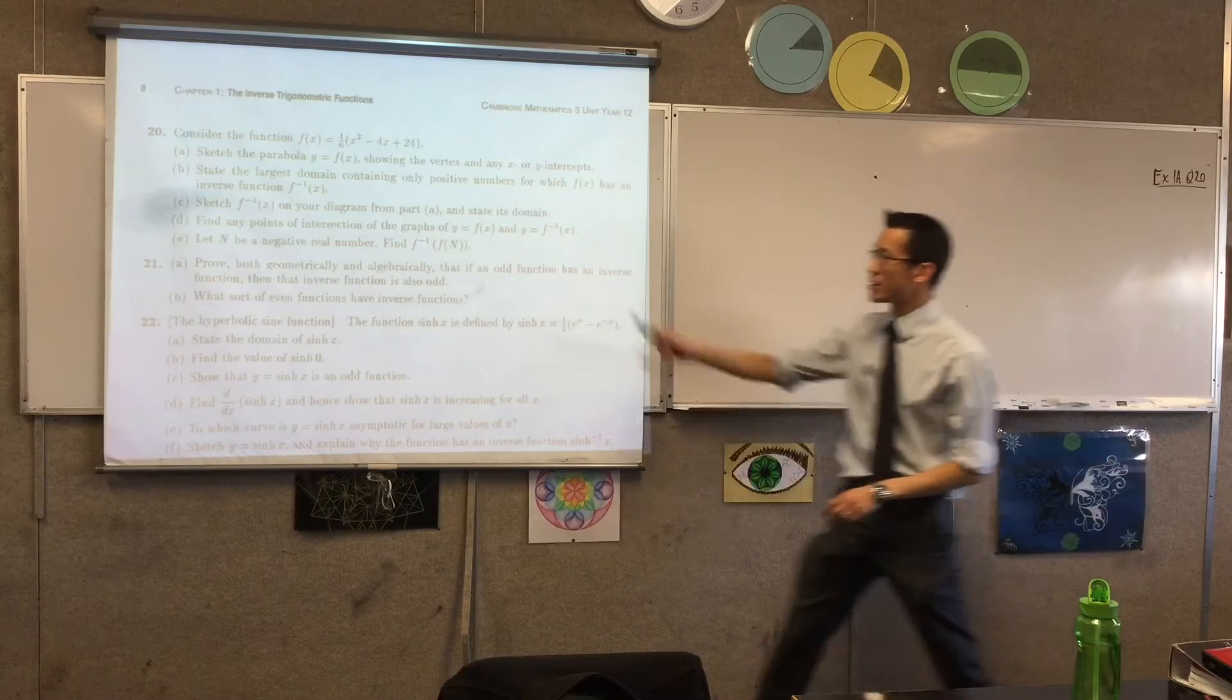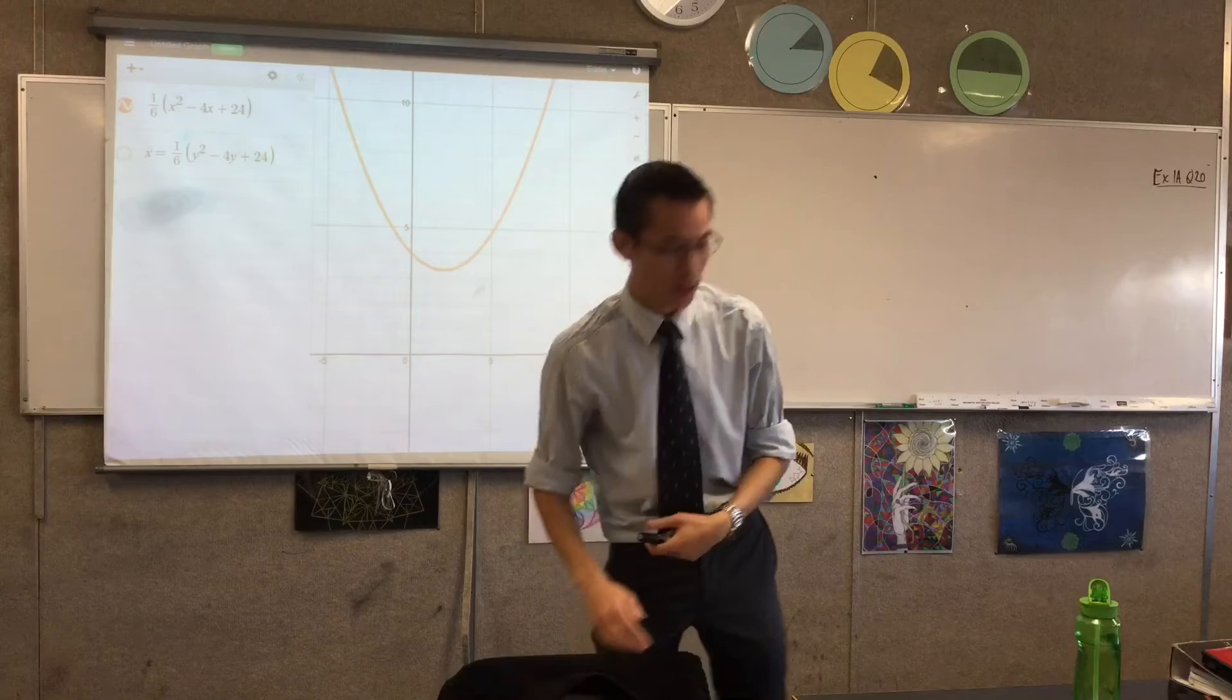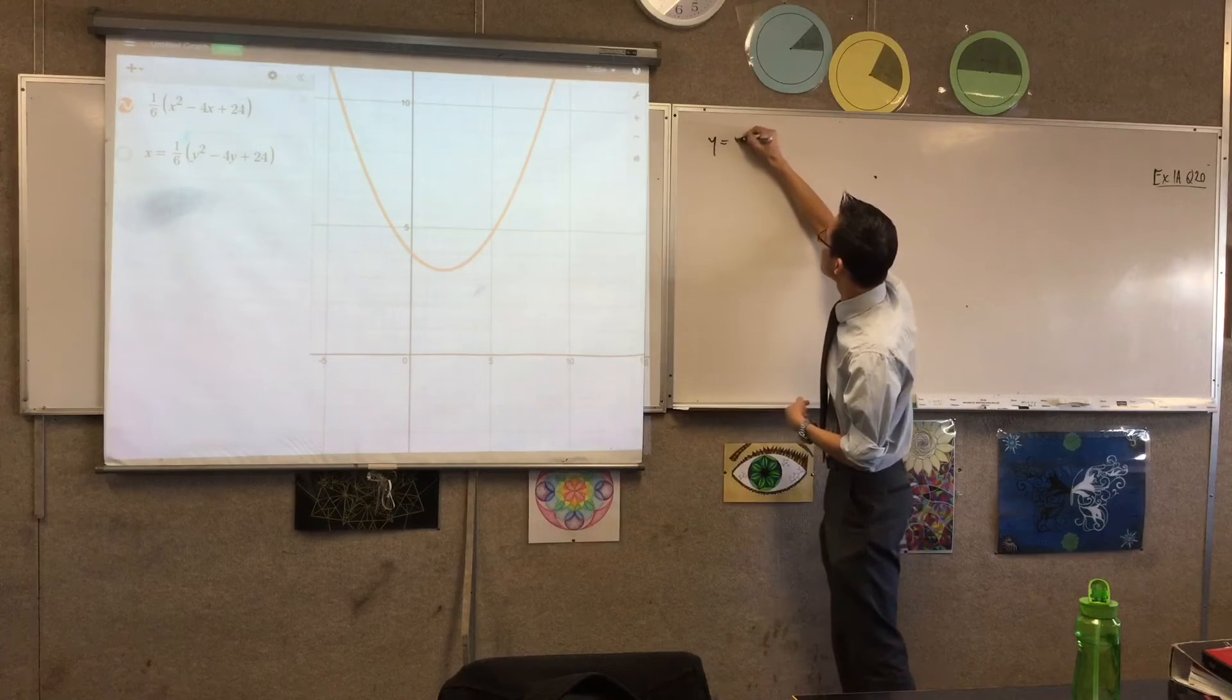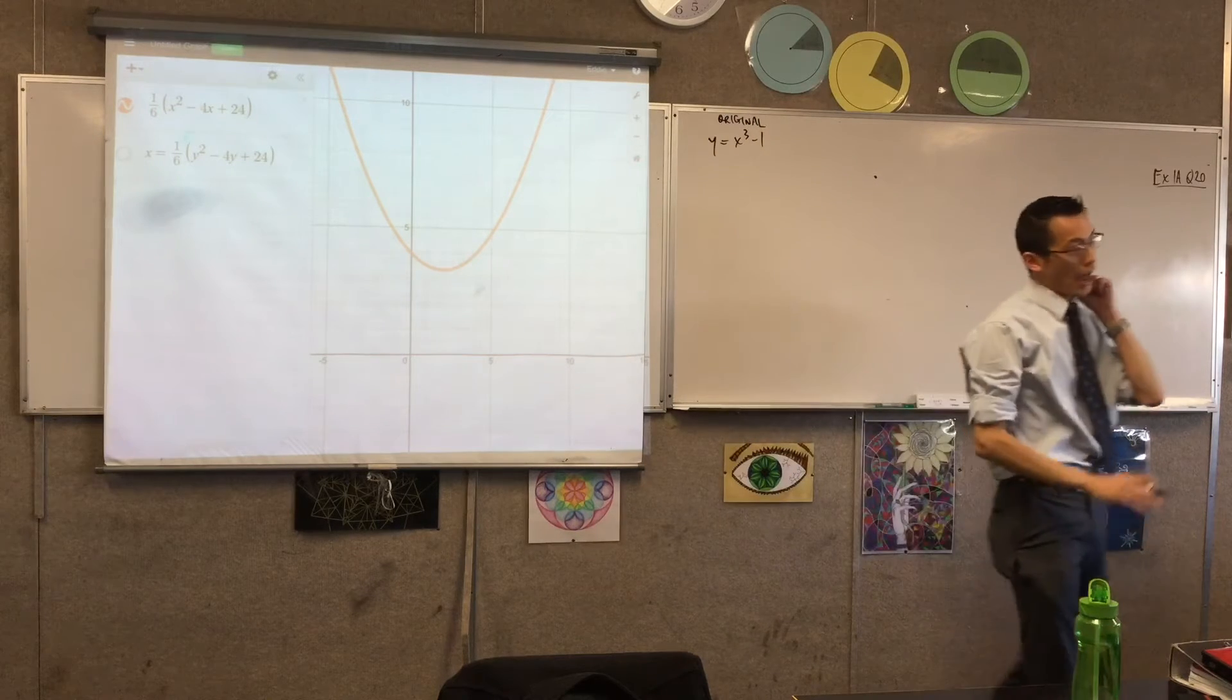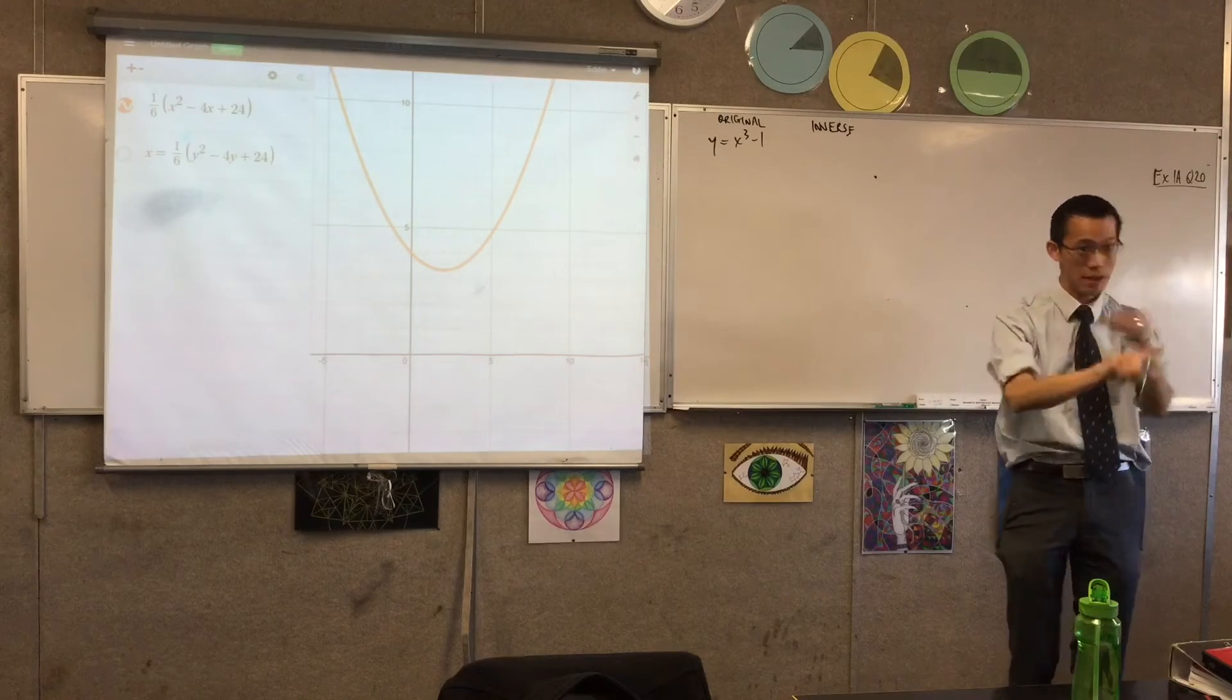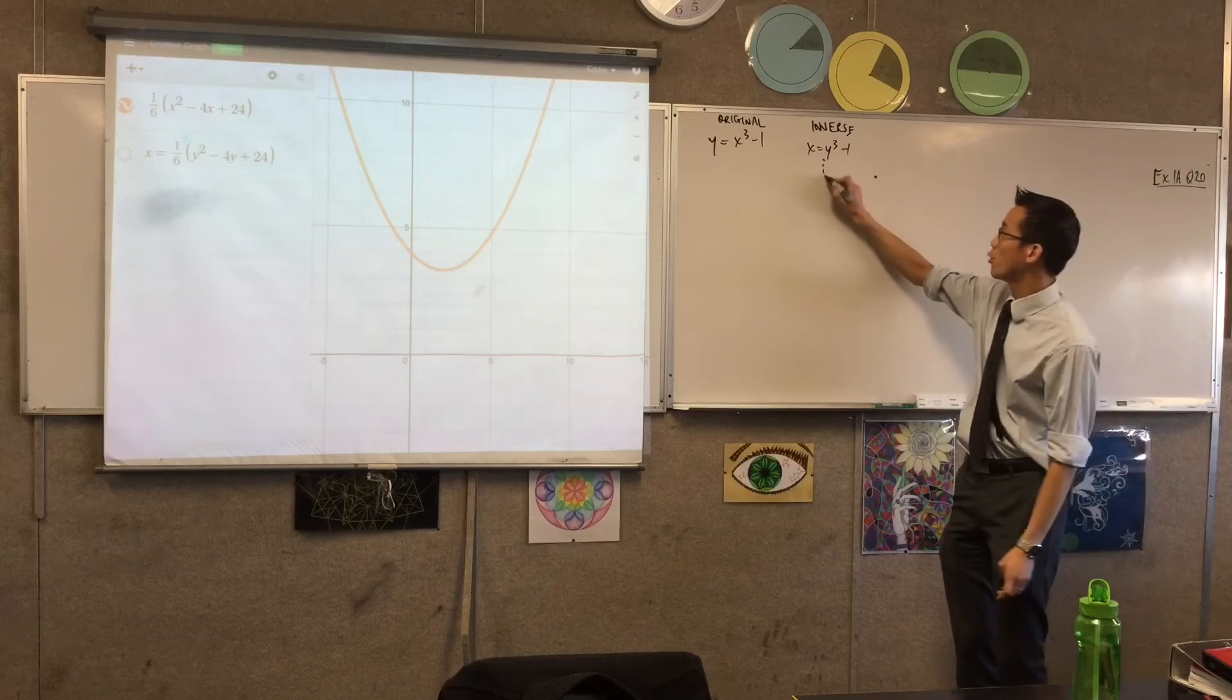Okay, so then it says, sketch f inverse on your diagram from part a and state its domain. Now I'm going to do a bit of a hack here, and I want you guys to be able to follow along with me. So if you have a computer there, you're welcome to do this. You can see, if I have a function normally, right? Like, if I gave you this, this one I've had a look at a few times. I can work out what the inverse is just by algebra, right? I can say, well, in order to get the inverse, I'm going to swap my inputs and outputs, my x's and my y's, like so. And then I just do my usual thing to make y the subject. So then you go through, and that's fine.